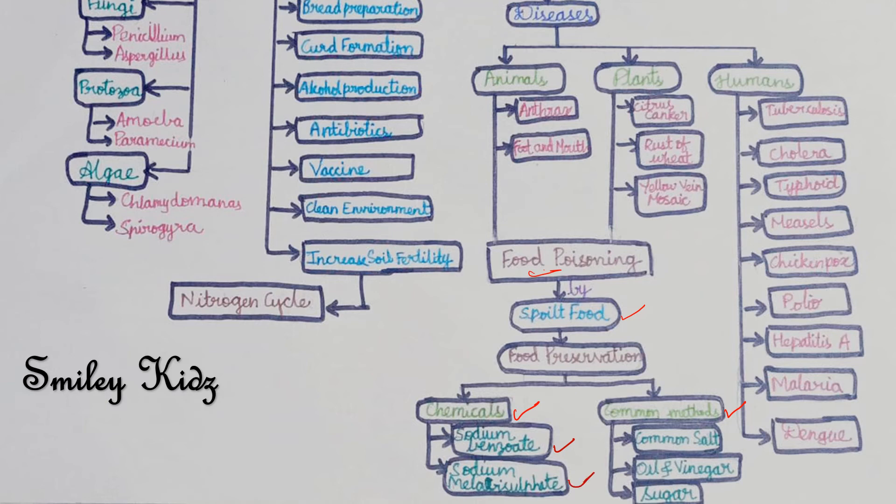Now let's talk about common methods: preservation by oil and vinegar, preservation by sugar. These are few common methods to preserve food.